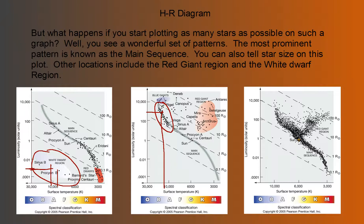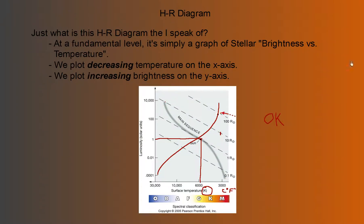Another interesting thing — the x-axis has decreasing temperature going left to right, which is a bit unusual. It wouldn't really make the graph any different; it would just be reversed if we had increasing temperature. But that's the way it's been done — kind of like why you put your last name first on some forms. So we plot decreasing temperature on the x-axis and increasing brightness on the y-axis.